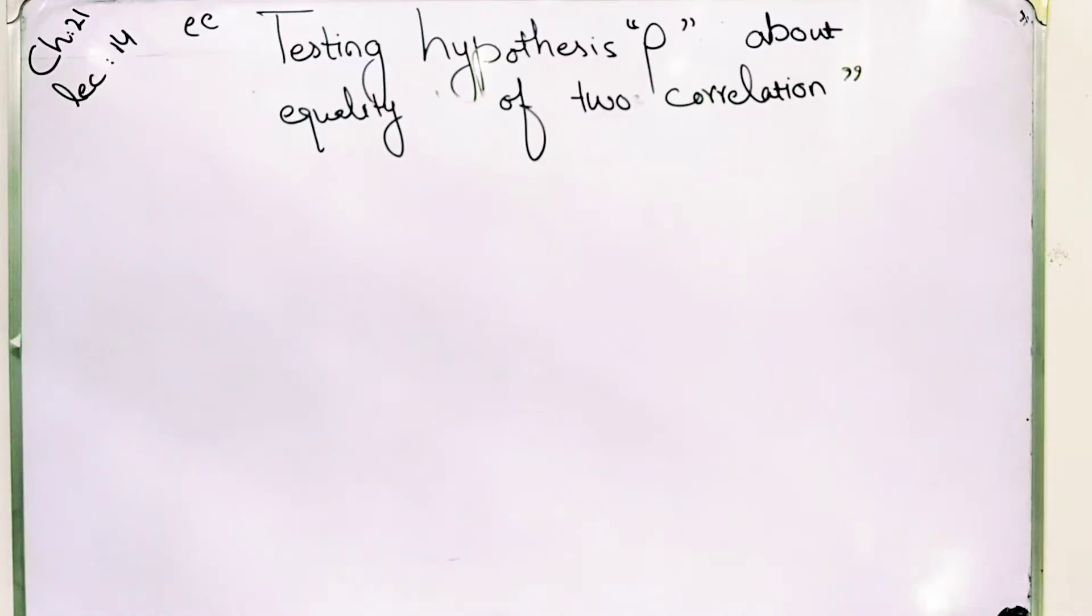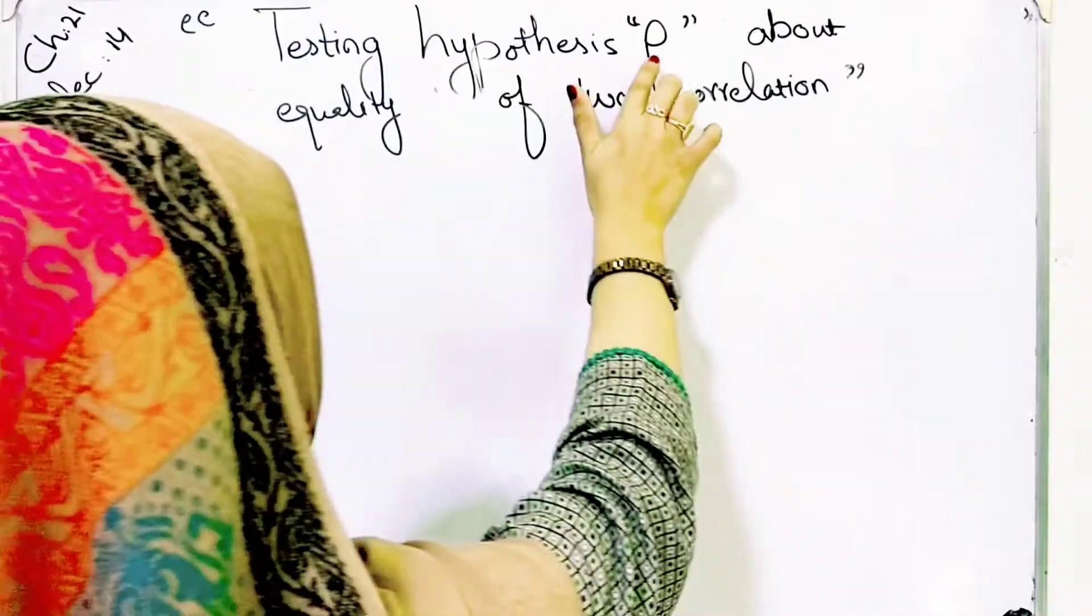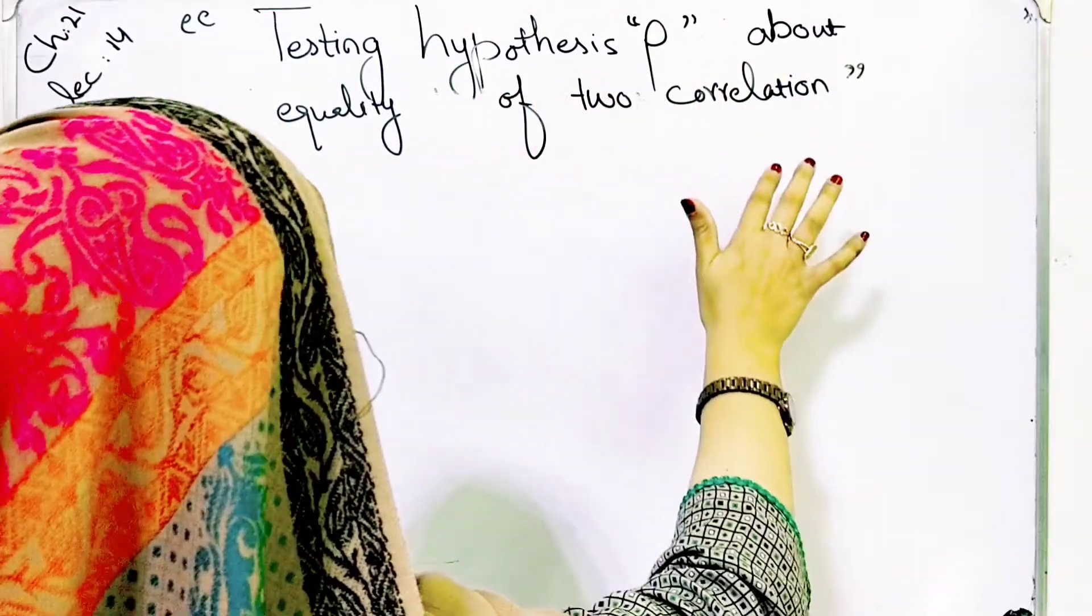In the name of Allah, Rahman, Rahim. In this statistics lecture number 14, we are discussing testing hypothesis rho about the equality of two correlations.